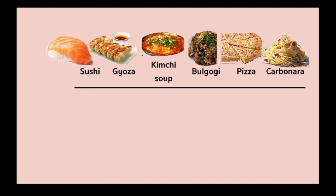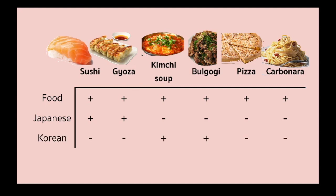More examples of analyzing semantic features using componential analysis: the words sushi, gyoza, kimchi soup, bulgogi, pizza, and carbonara. The first semantic feature that comes to mind is 'food,' so every word here shares that feature and we denote it with plus. However, these words also have different features because they differ by nationality. Sushi and gyoza share the Japanese food feature, while kimchi soup and bulgogi are Korean food. Pizza and carbonara have the Italian food feature. To sum up, these words have both shared and different features, so they can be used differently in contexts requiring different semantic features.